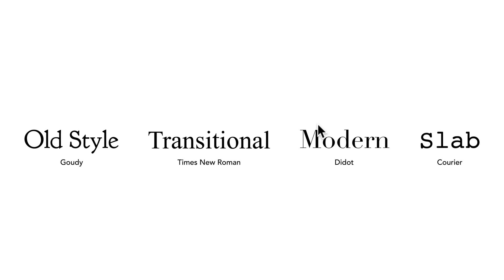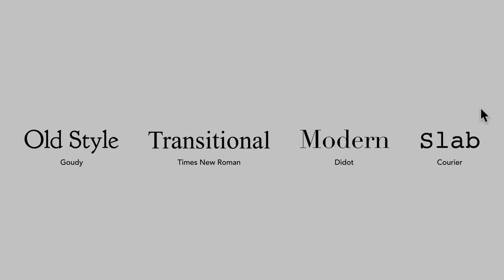Lastly, we have slab serif. Slab serifs have little to no contrast between thick and thin lines. You'll also notice that their serifs are much more rectangular or boxy. Typefaces in this category include Archer — we're using Courier here. And that's going to be it for serif typefaces.